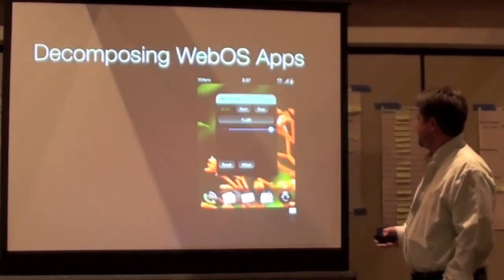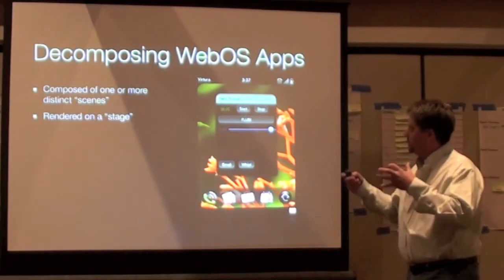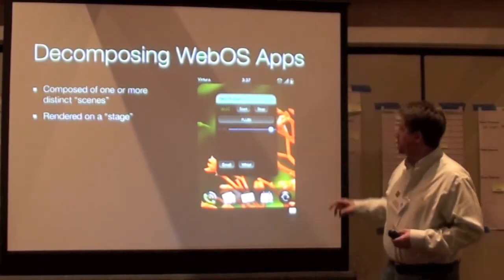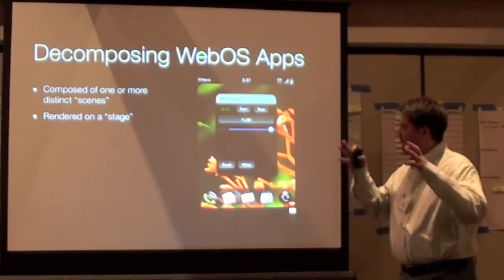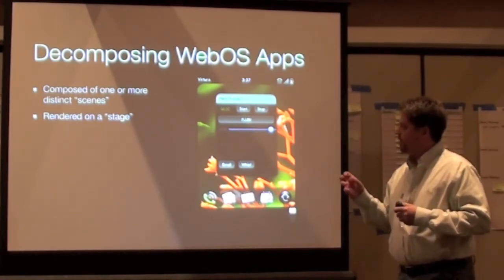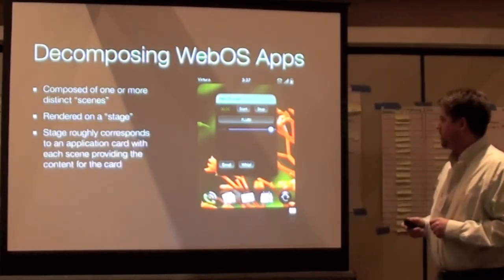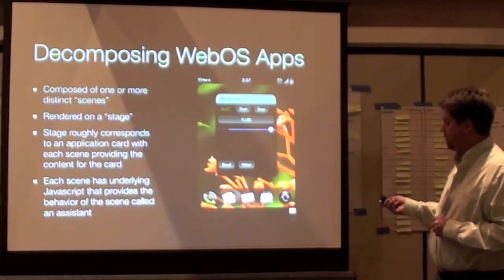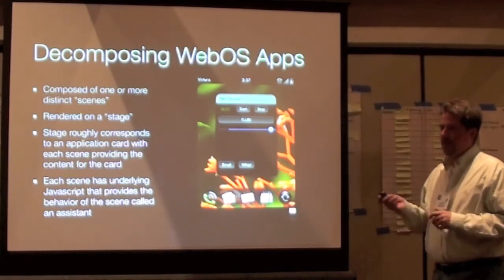Decomposing the WebOS apps — you can see the little Flubber out here on the right-hand side. Your applications are decomposed into scenes and stages. You can notice WebOS has this card metaphor, and each one of the cards is basically a stage. You then push onto the stage various scenes. You can think of your tab as basically your stage, and as you move between web pages, you're basically pushing and popping scenes. It's a very easy metaphor. The stage roughly corresponds to the application card, and each scene has underlying JavaScript that provides the behavior of the scene itself. When you're writing a WebOS app, you're actually writing JavaScript, which I found to be pretty straightforward.